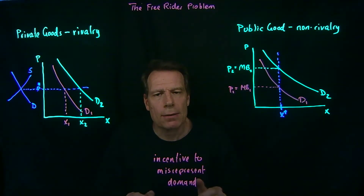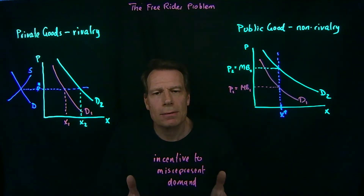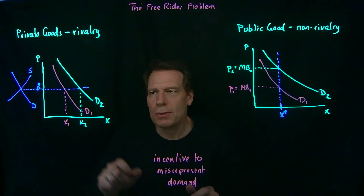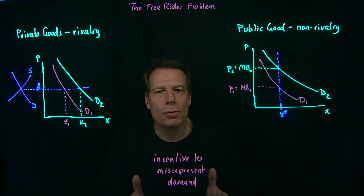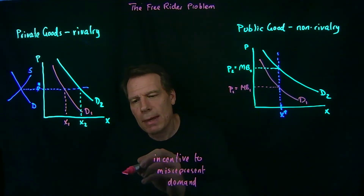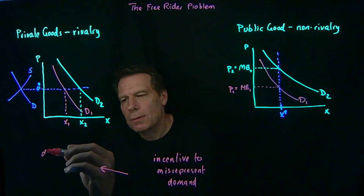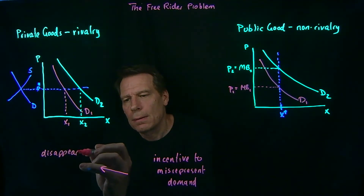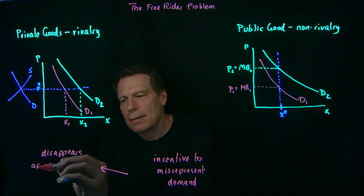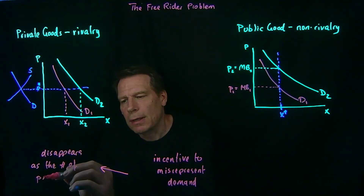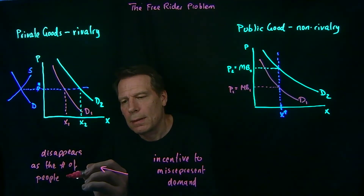Everybody is a price taker — everybody just takes that price as given. There's no reason to misrepresent your demand, because the only one using the demand is you, as you determine how much to buy at a price you have no control over. So the incentive to misrepresent your demand disappears in competitive markets as the number of people in the market increases.